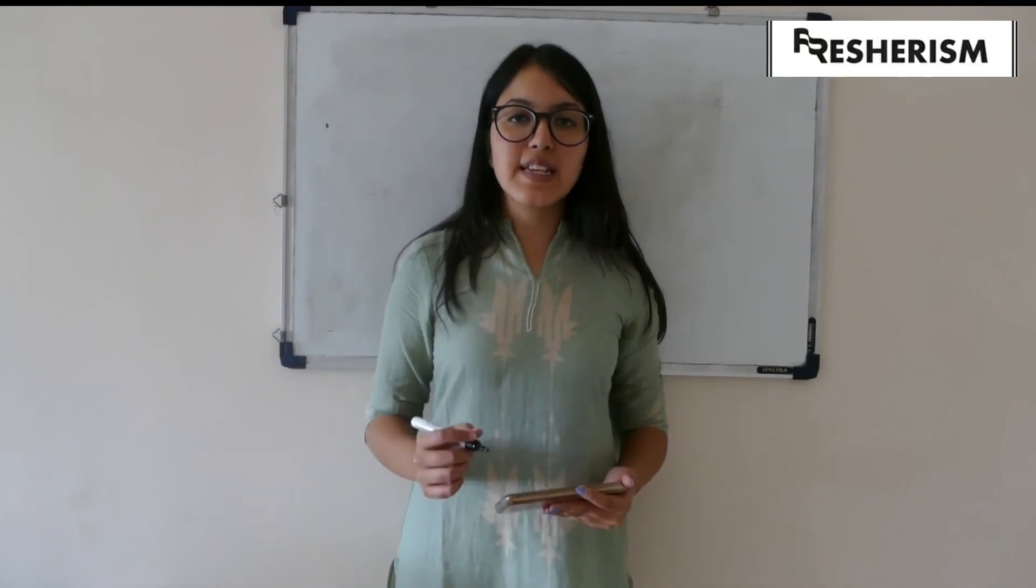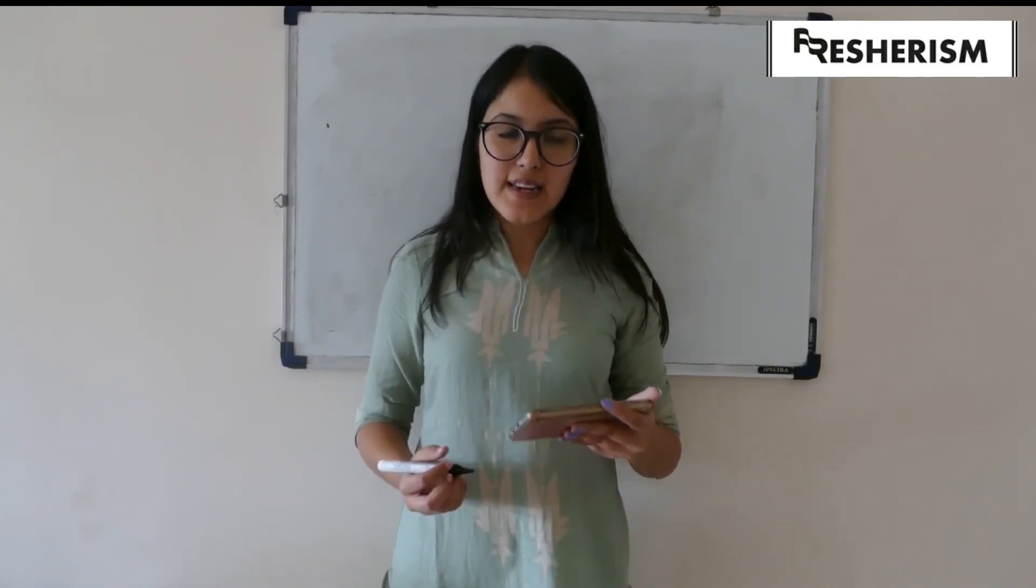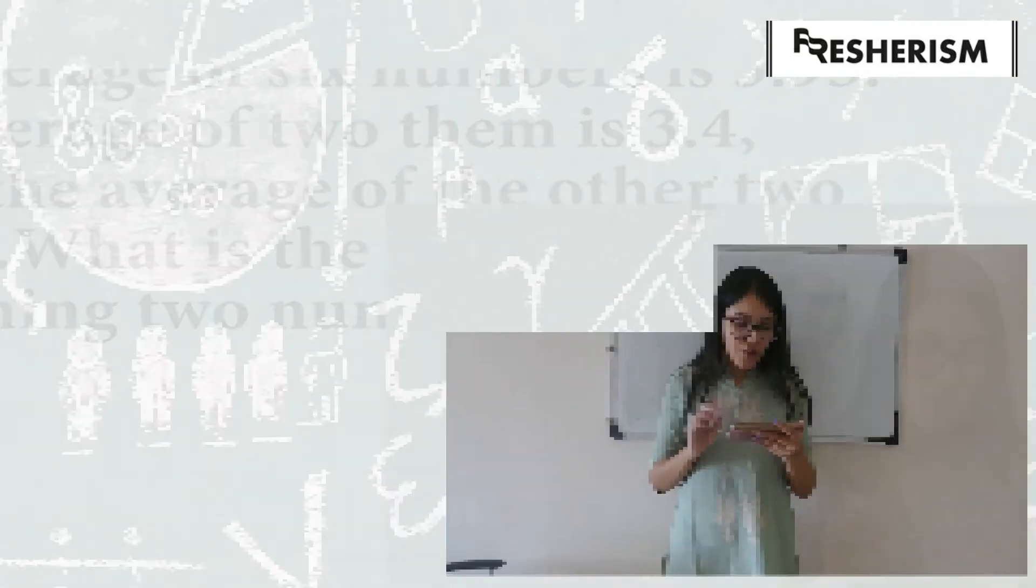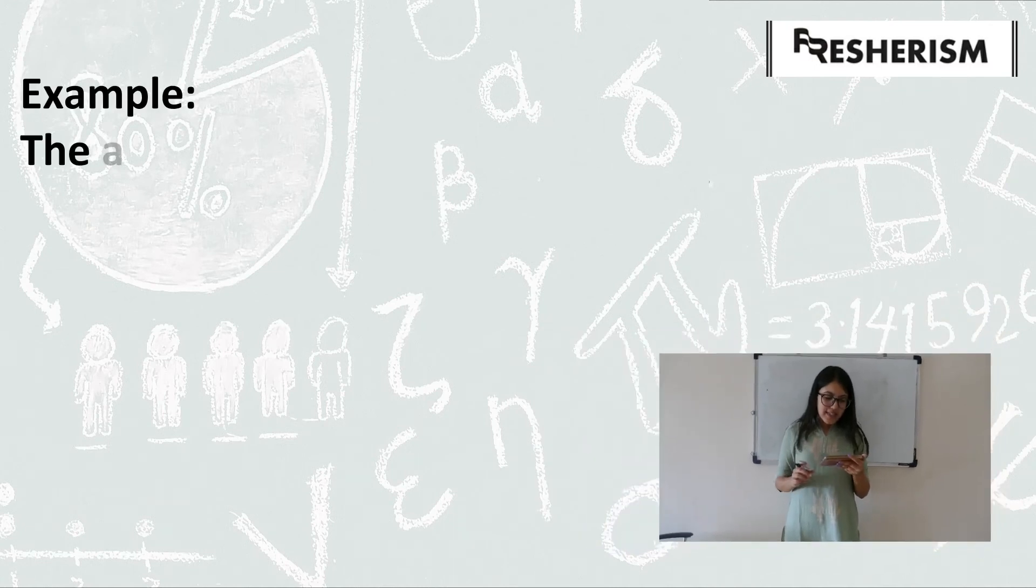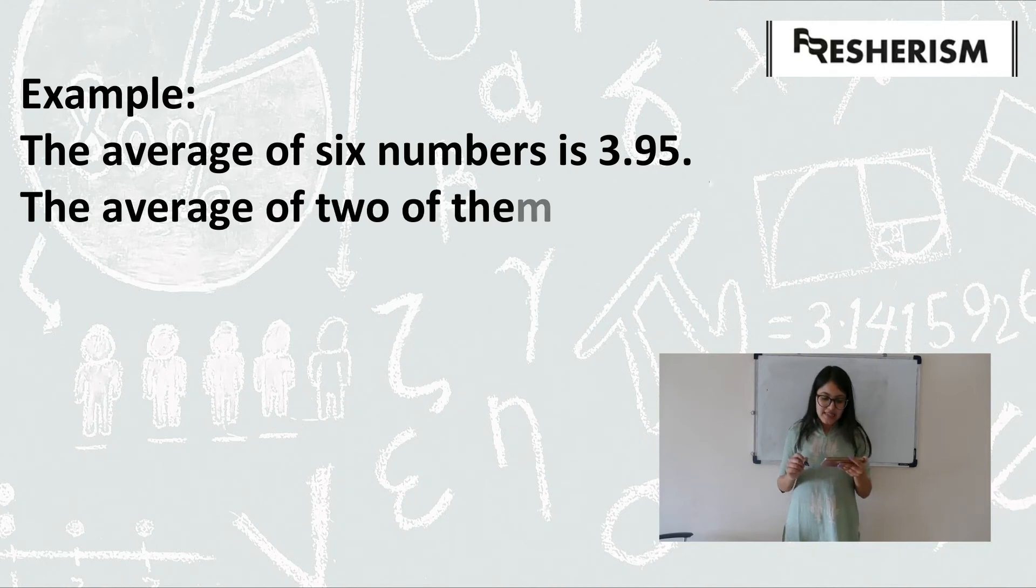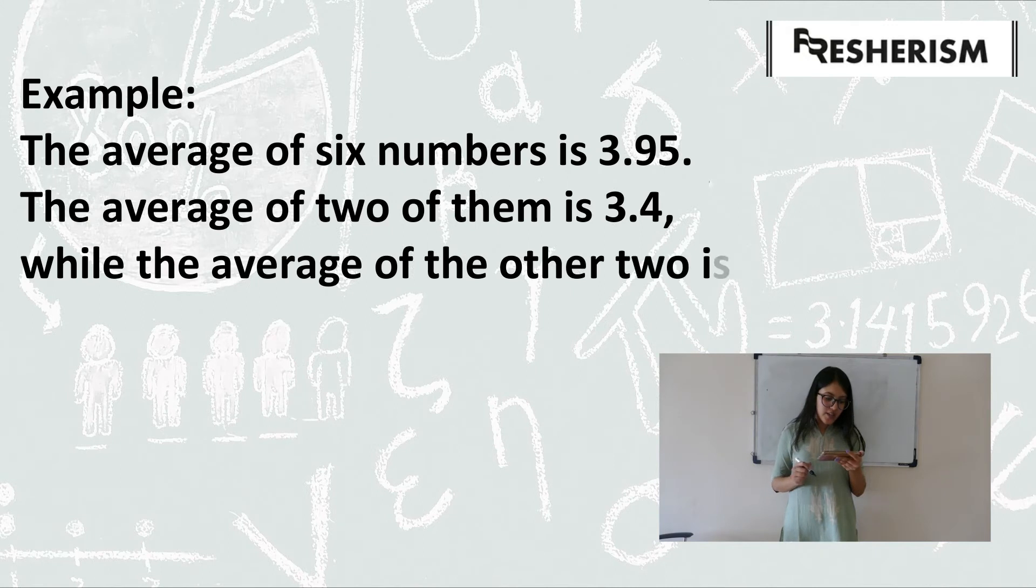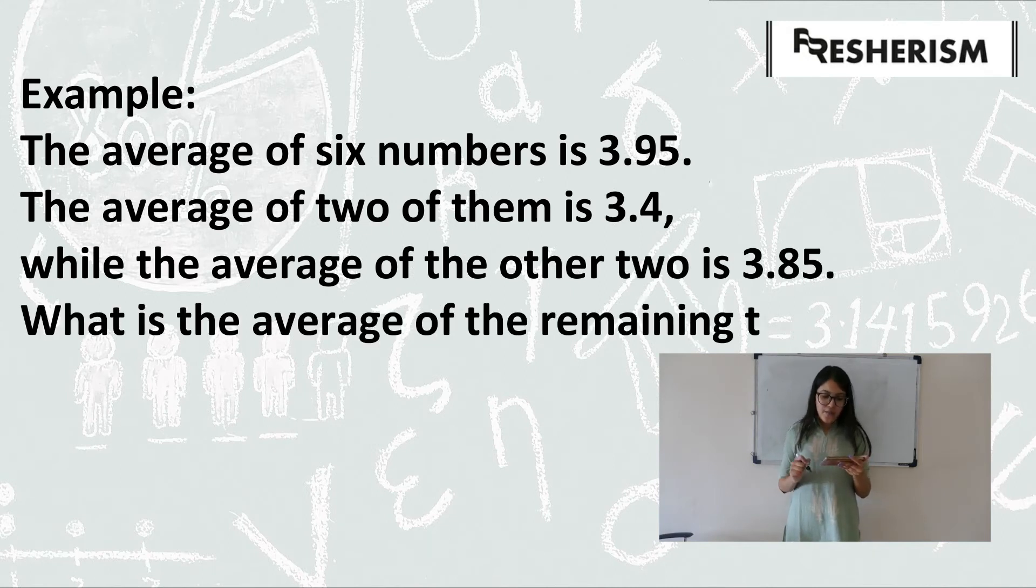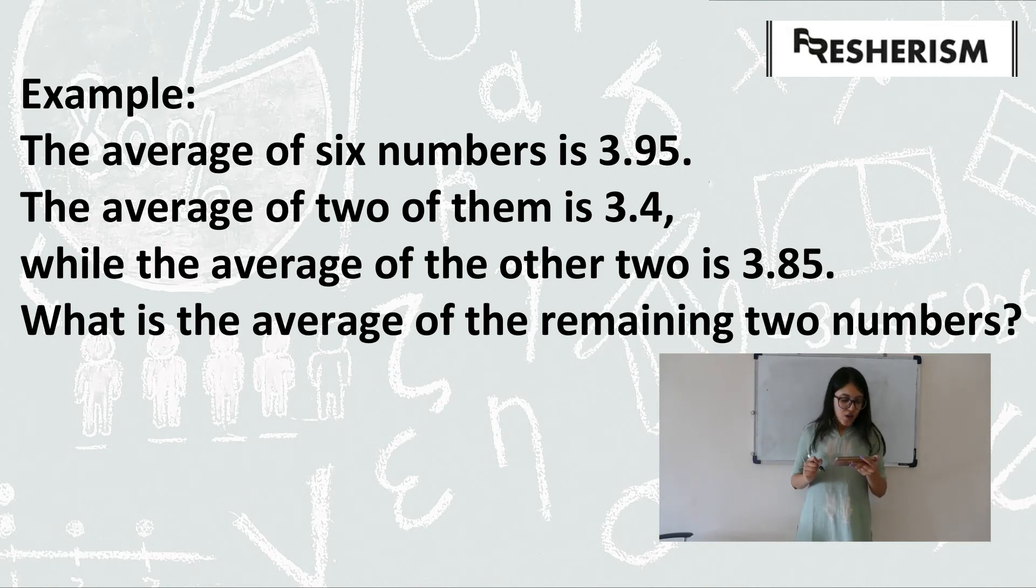Let us now consider another example for a better understanding. The example on your screen now reads: The average of 6 numbers is 3.95. The average of 2 of them is 3.4, while the average of the other 2 is 3.85. What is the average of the remaining 2 numbers?